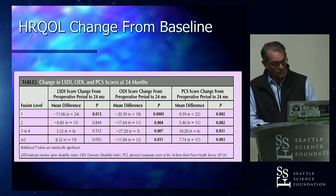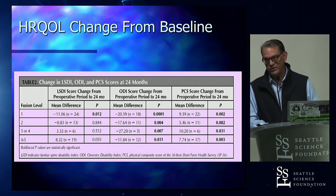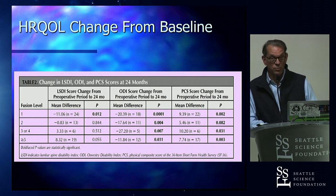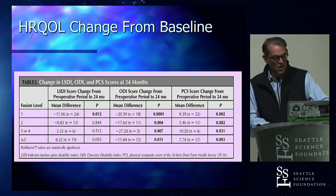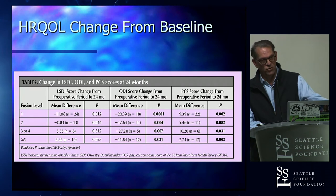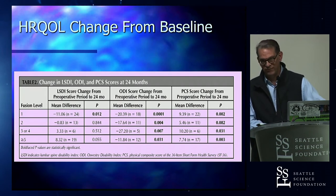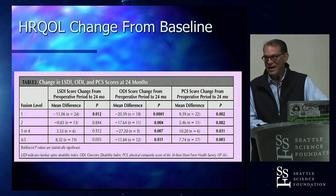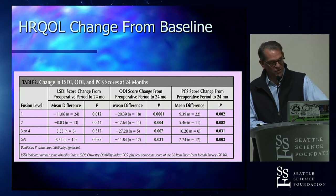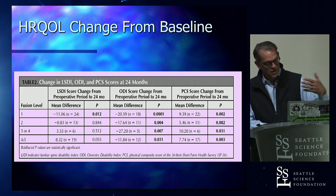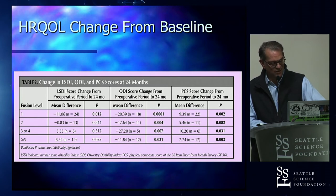Looking at the changes in LSDI and ODI, something interesting emerged: one-level fusions actually showed reduced stiffness limitations following surgery. These patients come in with pain, which limits their mobility — they perceive it as stiffness. After fusion you take away their pain, and even though you've removed motion at one segment, they're actually more flexible because they have access to all the other levels now. Two-level fusions barely changed from baseline.